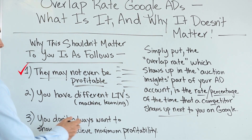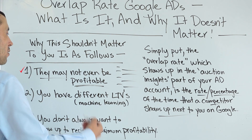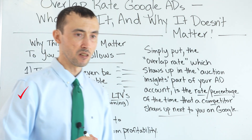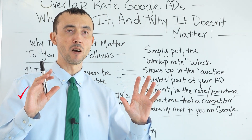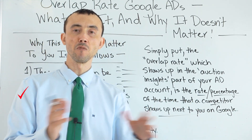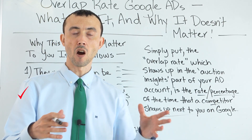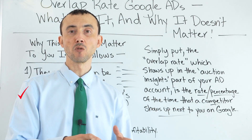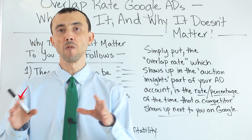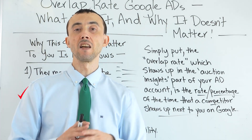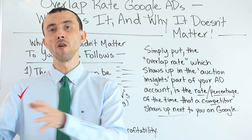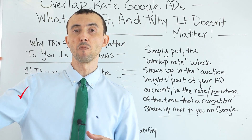The other thing to keep in mind regarding overlap rate is that you have a different lifetime value of a customer than somebody else. Yes, you might both be selling the same product — say a DeWalt 12R drill — and advertising on the same keyword. But in that market, the customer is worth X amount of value to each company. Once you get them to buy, you email market to them and a certain percentage come back and buy again. A lot of times businesses lose money on that initial customer, knowing they'll come back multiple times and that's where the return comes in.